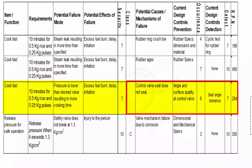The third row addresses the potential cause of the control valve seat not sealing properly. This regulation valve controls the pressure inside, and if it is not sealing properly it will keep leaking steam, reducing pressure and resulting in excess fuel burn and delay. The current design control prevention is the angle and surface quality of the control valve, giving an occurrence ranking of 6. Detection via seat angle tolerance gives a detection ranking of 7, so the RPN is 294.